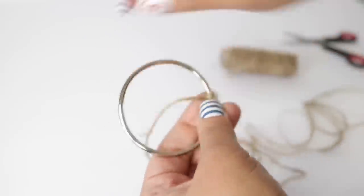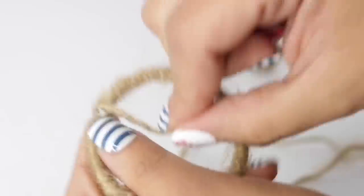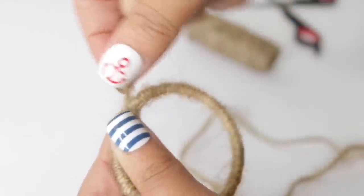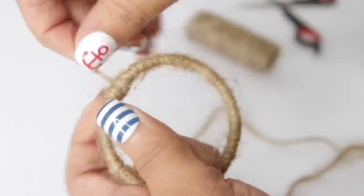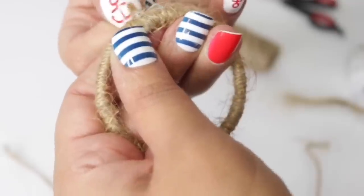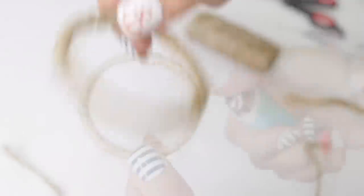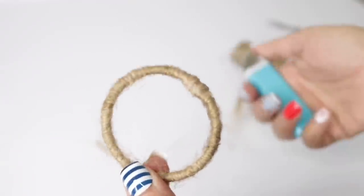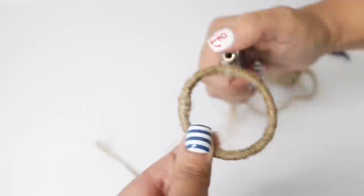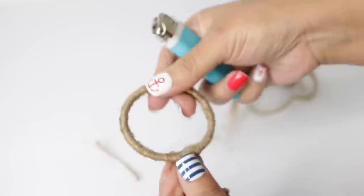Now of course you can totally skip this step and just keep the rings normal, but I think it looked a little bit more cohesive. Once it's completely covered, I did grab a lighter and burn off all the extra fuzzy pieces just so it looked nice and put together. This totally changes the look of the rings and it totally changes the look of the entire shelf to be completely honest.